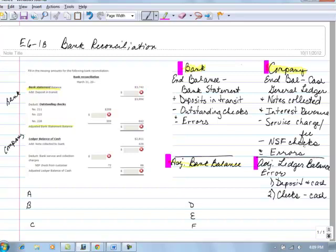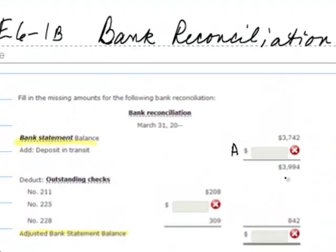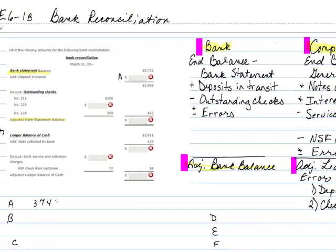The bank statement balance — we add to it any deposits that are in transit. This total of $3,994 is the total of that beginning balance of $3,742 plus those deposits in transit. So the implication is that the amount of deposits in transit would be $252.